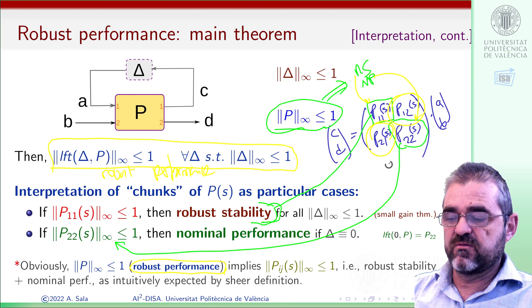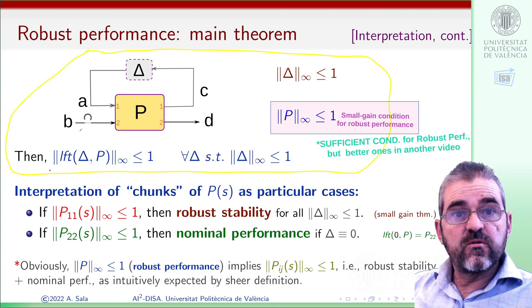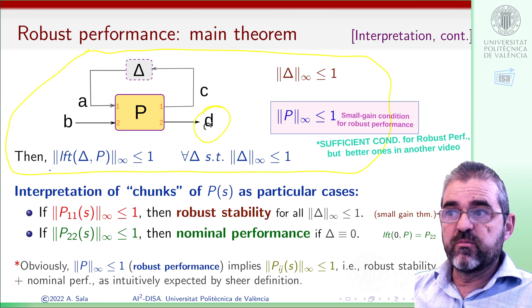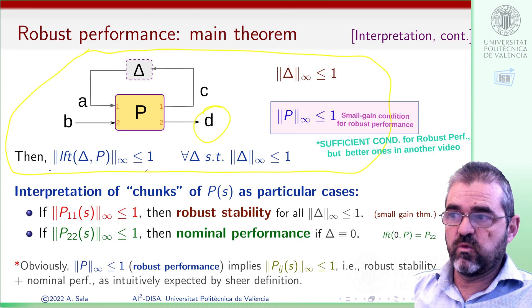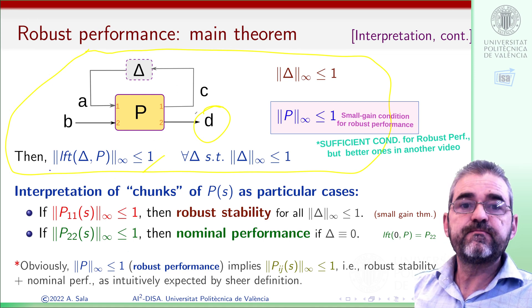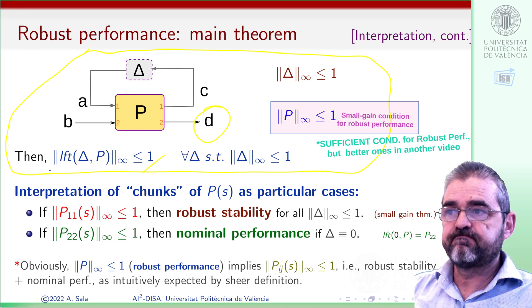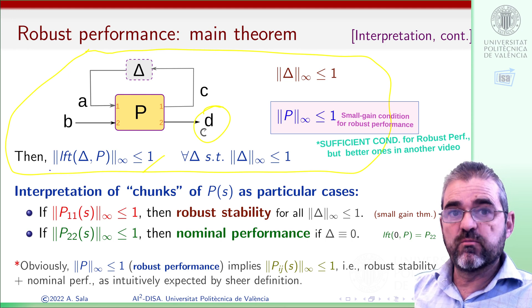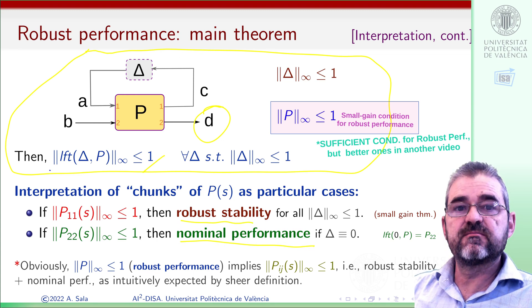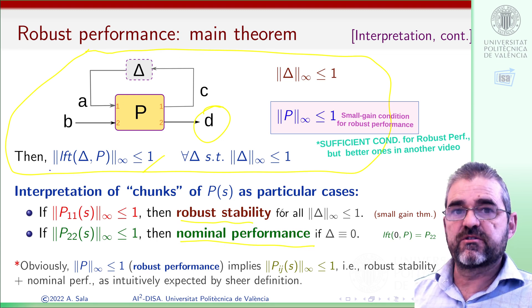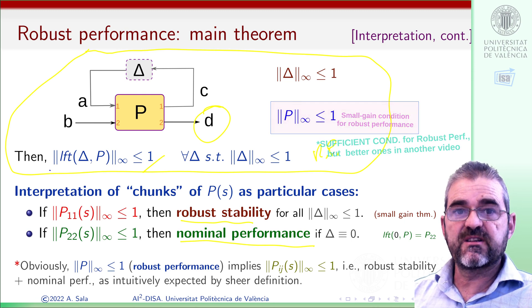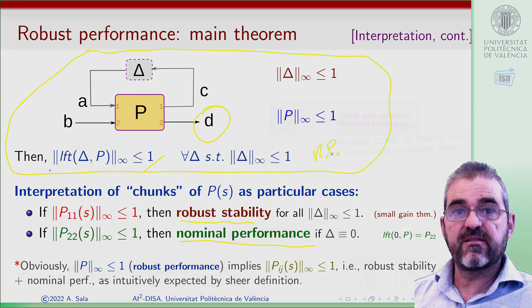So this is it. In this video, we did show the key result in proving that the norm of D is below a given desired value, 1 without loss of generality, in the face of uncertainty—the robust performance condition. And we saw that it is more stringent than having robust stability and nominal performance, which are necessary conditions for robust performance, but not sufficient ones. So we end the video here. Thanks for watching.